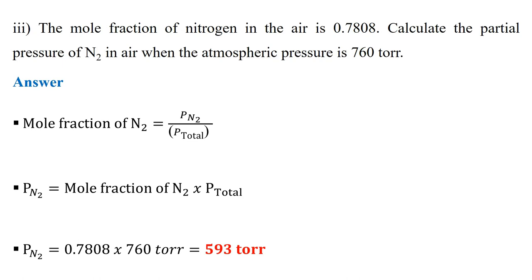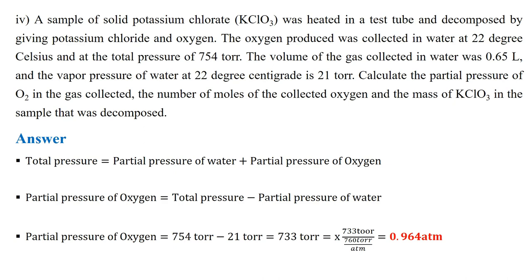For the third sub-equation: the mole fraction of nitrogen in air is 0.7808. Calculate the partial pressure of nitrogen when the atmospheric pressure is 706 torr. Using the formula — mole fraction equals partial pressure divided by total pressure — the partial pressure of nitrogen equals the mole fraction times the total pressure: 0.7808 × 706 torr = 551 torr... giving a partial pressure of nitrogen equal to 551 torr, approximately 551 torr.